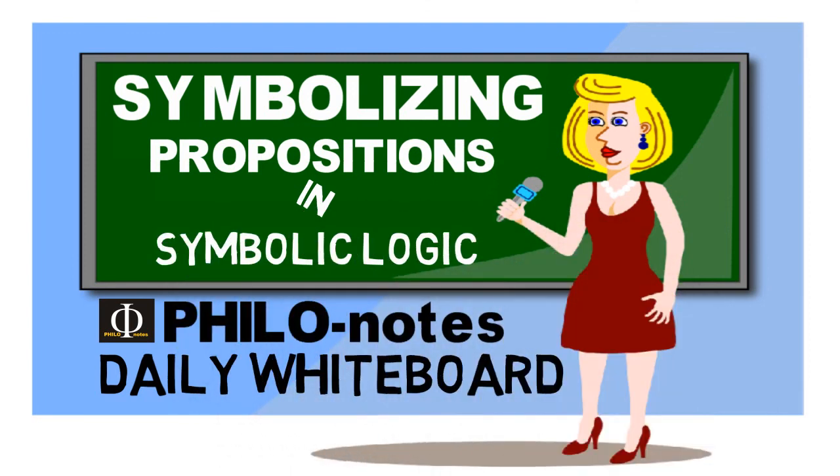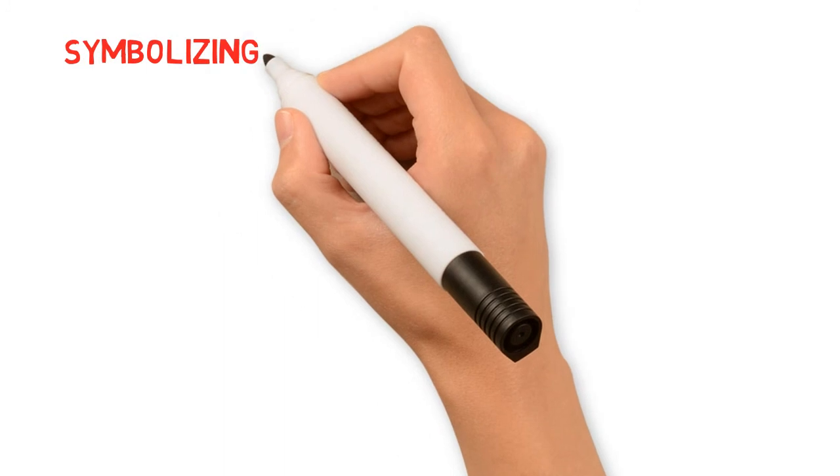Please note that this is very important because, as I have already mentioned in the previous edition, before we can determine the validity of an argument in symbolic logic by applying a specific rule, we need to symbolize the argument first. So, how do we symbolize propositions in symbolic logic?